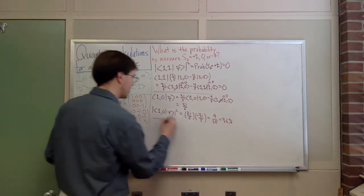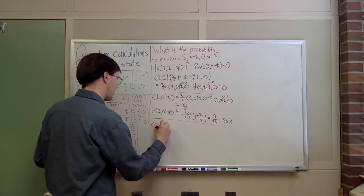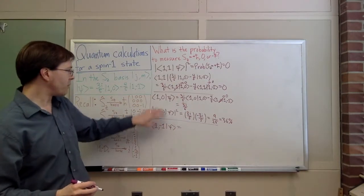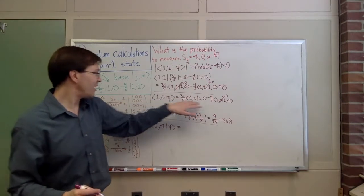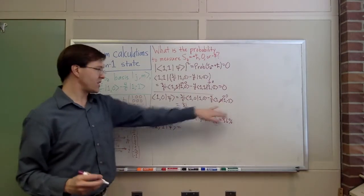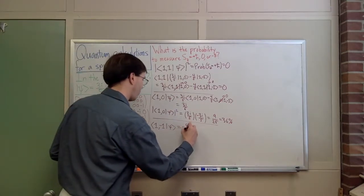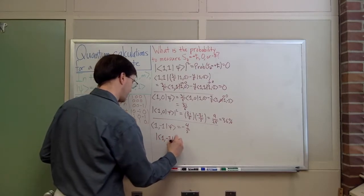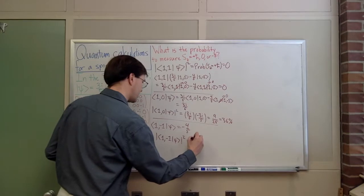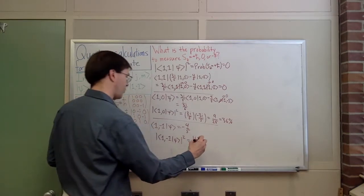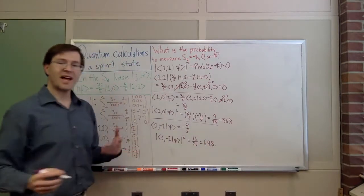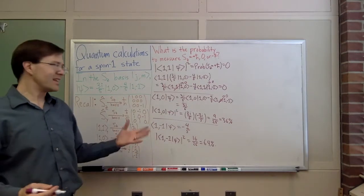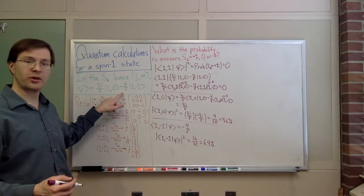Finally I can ask what is ⟨1,-1|ψ⟩. The |1,-1⟩ bra kills the |1,0⟩ ket, and matches the |1,-1⟩ ket. I get minus 4/5. So the probability is |⟨1,-1|ψ⟩|² = 16/25, or 64%. That's an example of doing simple probability calculations in the basis in which the state was already written. I could have just read those numbers off directly.